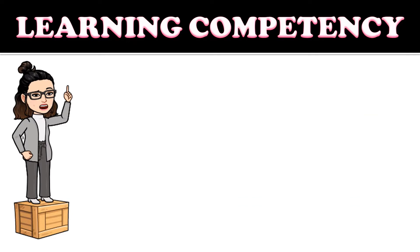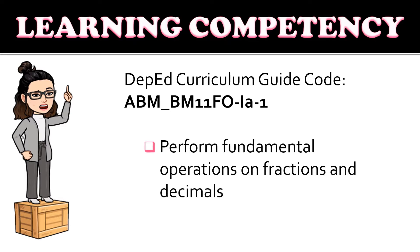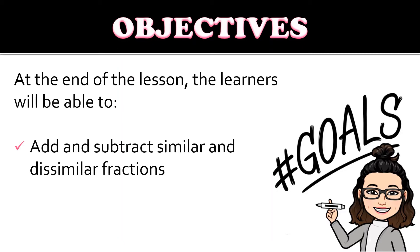The learning competency is under the DepEd curriculum guide; the code is ABM_BM11FO-Ia-1, which is to perform fundamental operations on fractions and decimals. The objective for this lesson is that at the end of the lesson, learners will be able to add and subtract similar and dissimilar fractions.